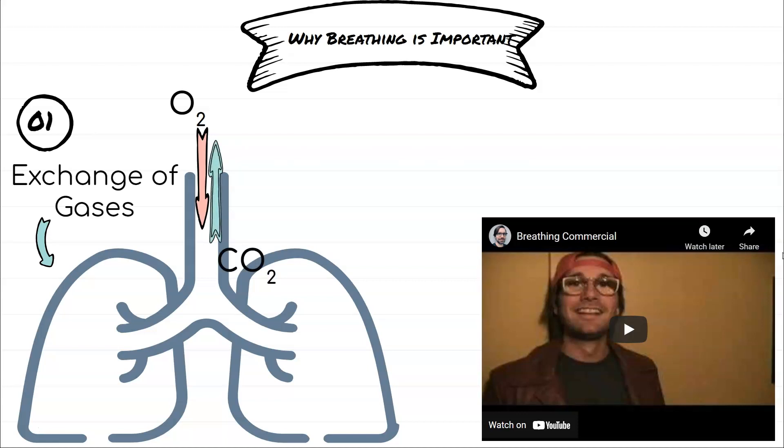We also learned that a byproduct or what we get rid of when we're doing cellular respiration is carbon dioxide. So we need to get rid of carbon dioxide from our body. Breathing and exchanging of gases, the key part here is getting rid of waste. Maintaining homeostasis within our body is all about maintaining that balance. Carbon dioxide as a gas is very dangerous to us and if it ends up building up within our body it can cause damage.